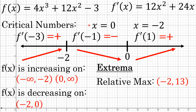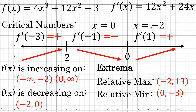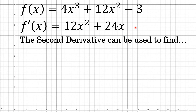At x equals 0, the other critical number, the graph is decreasing before it and increasing after, so x equals 0 is a relative minimum. Substituting 0 into the original function gives f(0) equals negative 3, so the relative minimum is at (0, negative 3). Extrema can only occur at critical numbers, where the first derivative equals zero in a polynomial function.